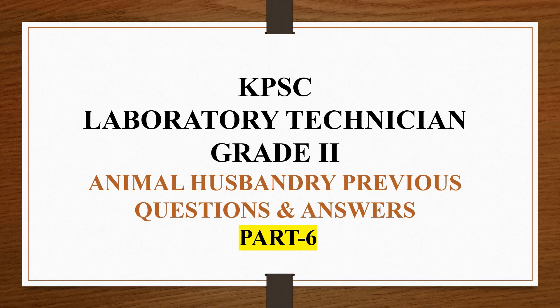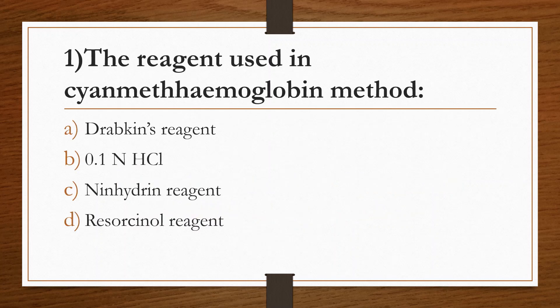First question: the reagent used in cyanmethemoglobin method. Option A: Drabkin's reagent. Option B: 0.1 normal HCl. Option C: Ninhydrin reagent. Option D: Resorcinol reagent. Answer is Option A, Drabkin's reagent. Drabkin's reagent comprises potassium cyanide, potassium ferricyanide, and potassium dihydrogen phosphate as components.